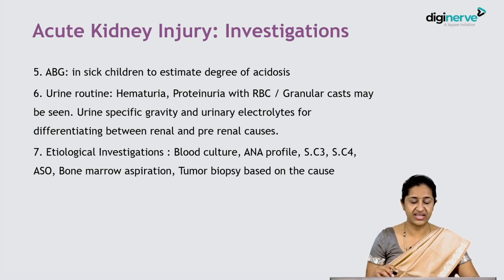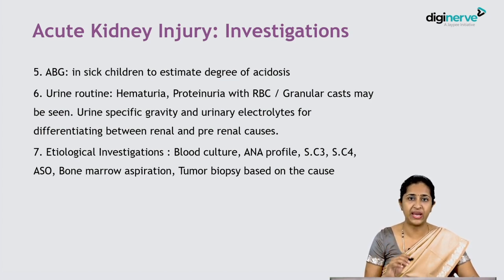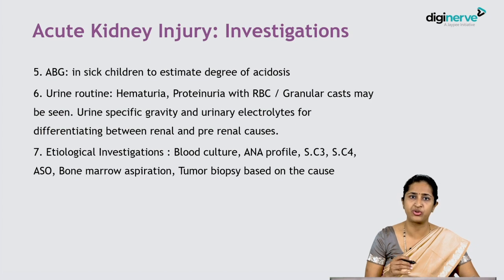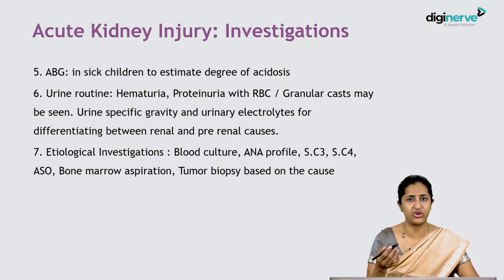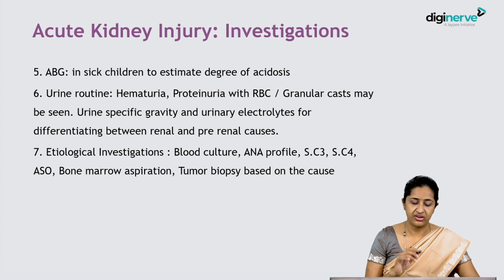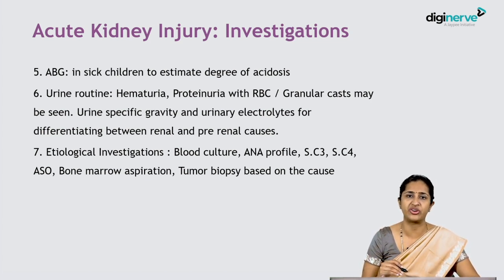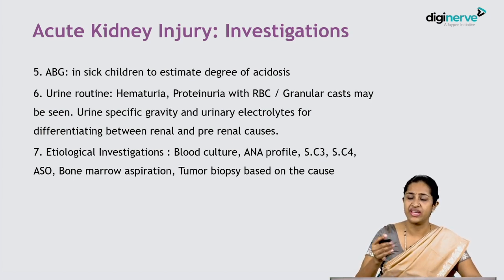Finally, investigate for the specific etiology. Blood cultures are done when suspecting sepsis. ANA profile, serum C3, C4, and ASO titres are done if suspecting glomerulonephritis secondary to collagen vascular diseases like SLE or post-streptococcal glomerulonephritis. Bone marrow aspiration is done if leukemia and tumor lysis is causing the AKI, and tumor biopsy if solid tumors are responsible. In this manner, first identify the cause of renal pathology — whether pre-renal, intrinsic renal, or post-renal — and then manage accordingly.